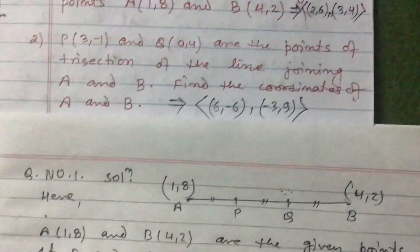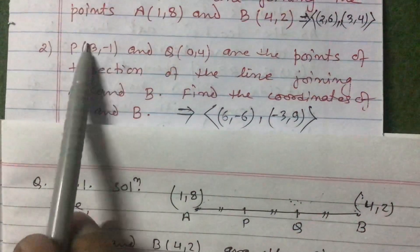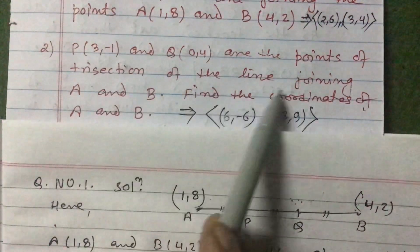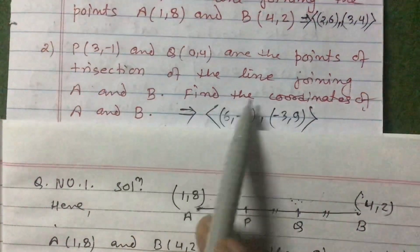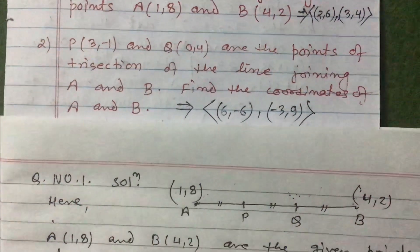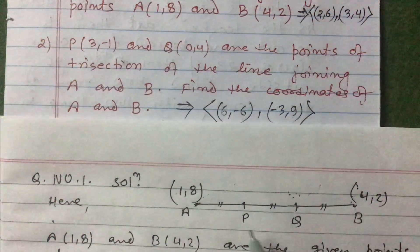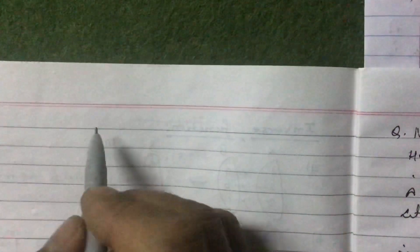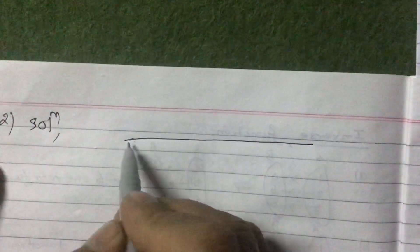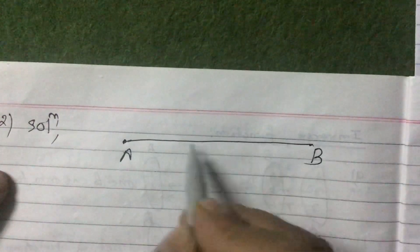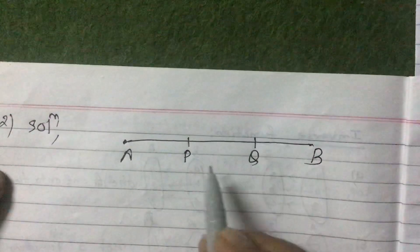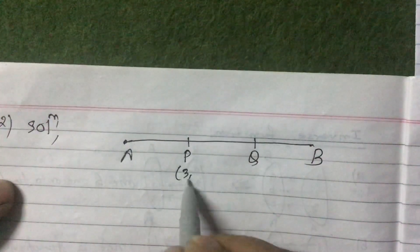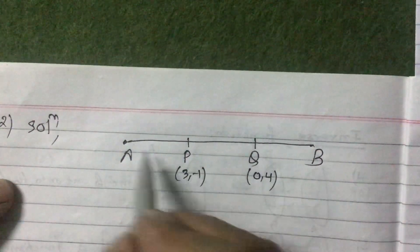Question number two: P(3, -1) and Q(0, 4) are the points of trisection of the line segment joining A and B. Find the coordinates of A and B. What is given: the coordinates of A and B are not given — we are asked to find them. P and Q are given to us.